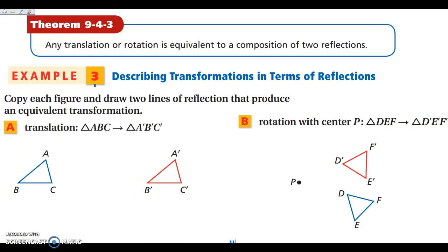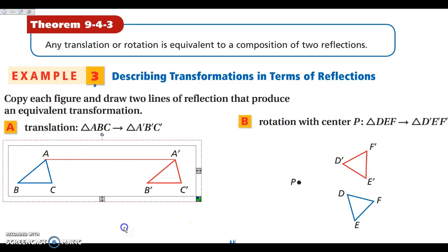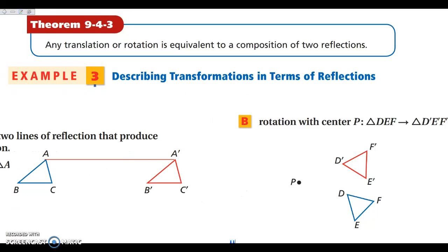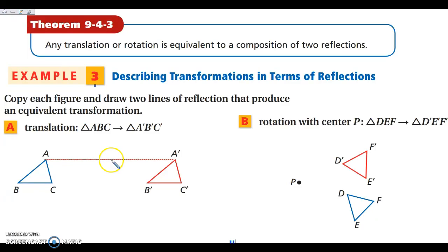I want to find where the lines of reflection would be. If I look at A to A prime — and you have these steps listed out on the side of your notes — I'm going to look at segment A to A prime and make it dotted. Then I'm going to estimate where the center is: this would be the midpoint for A to A prime.